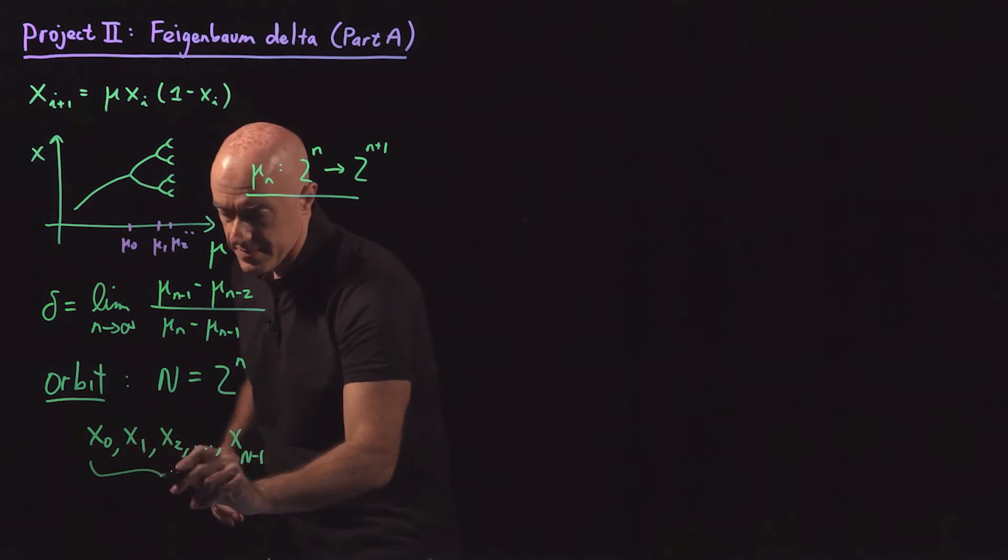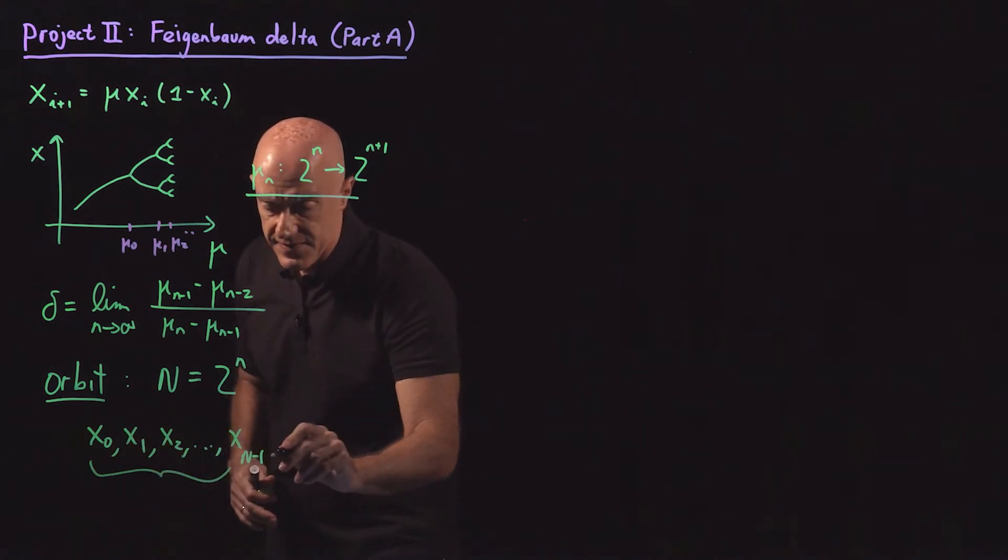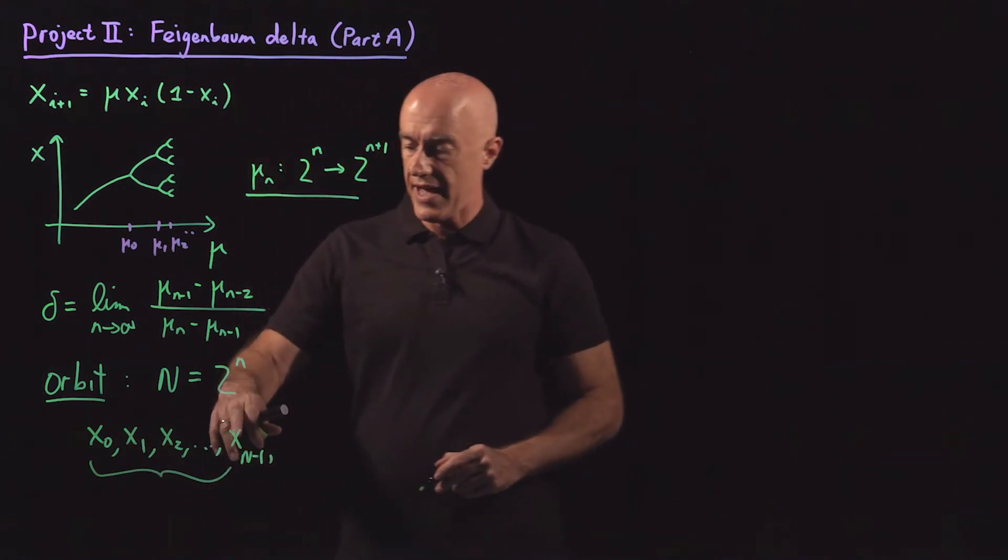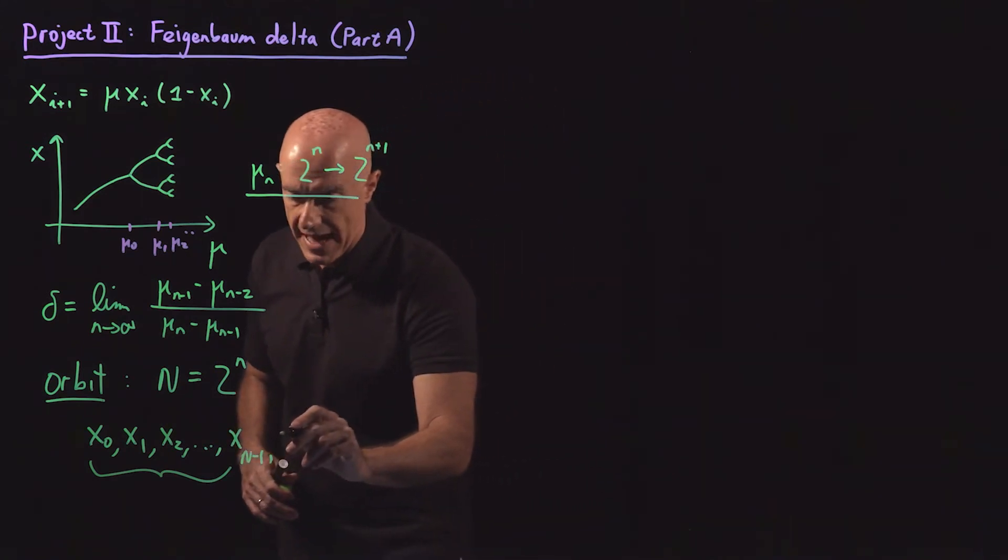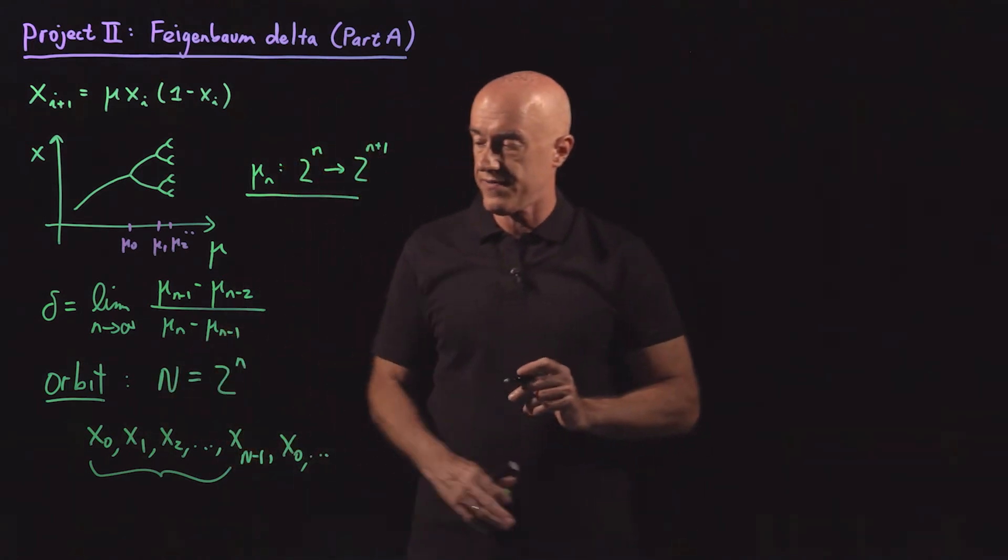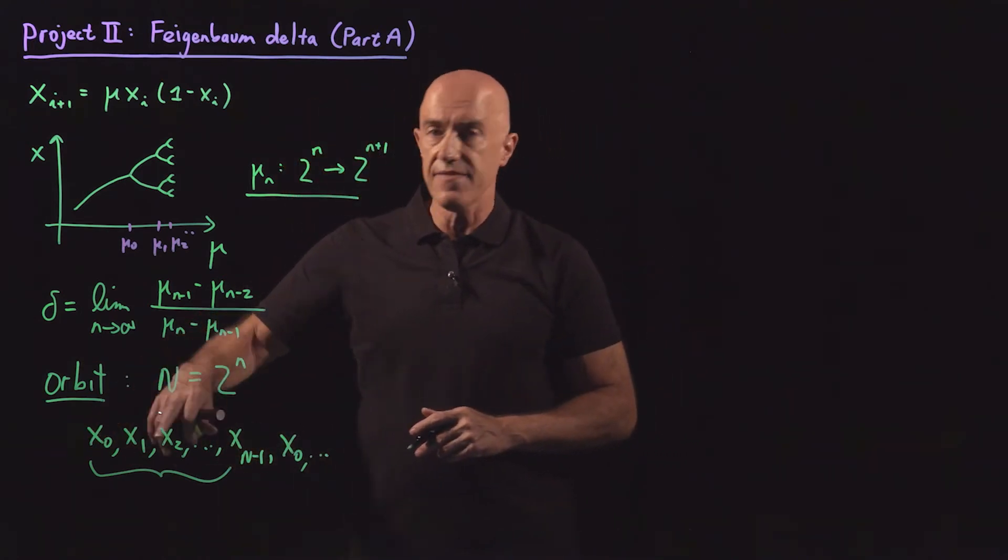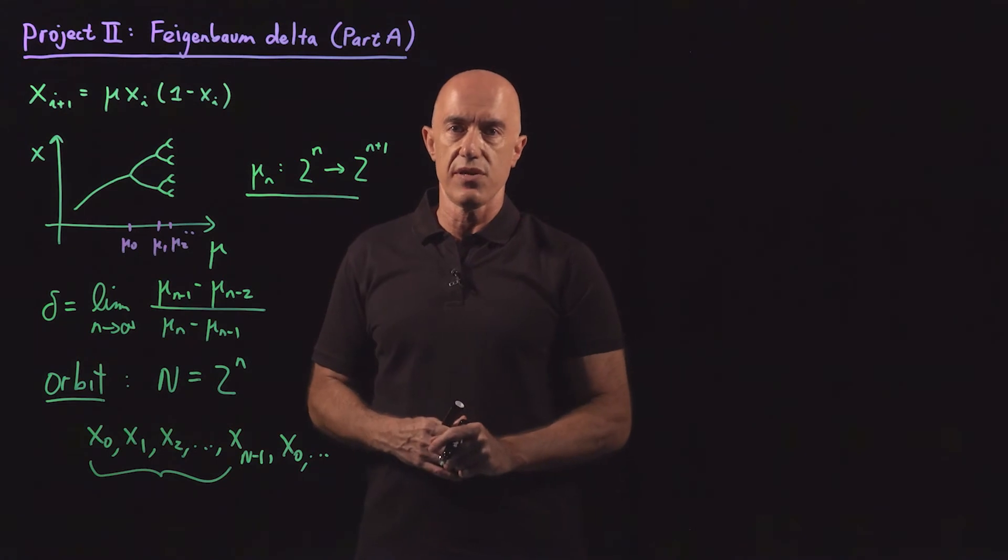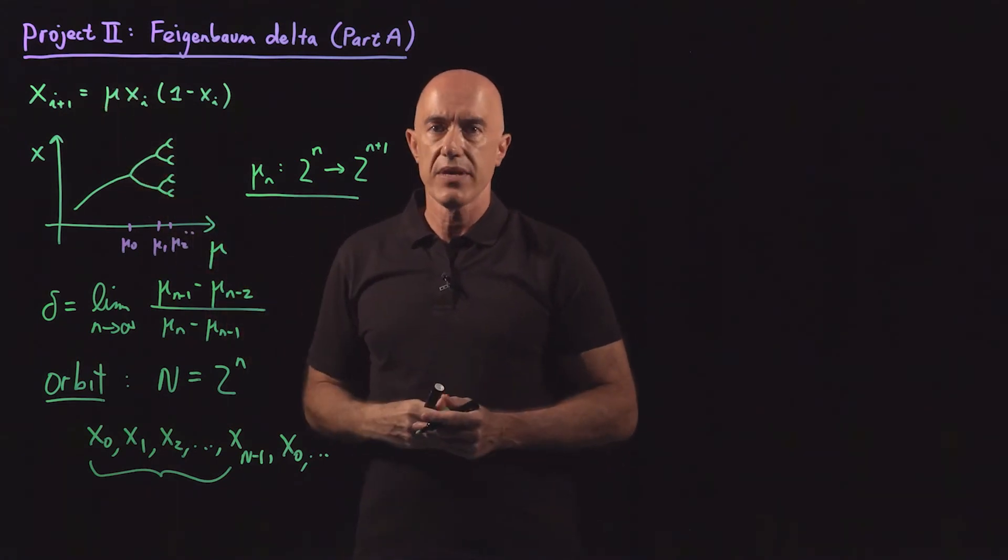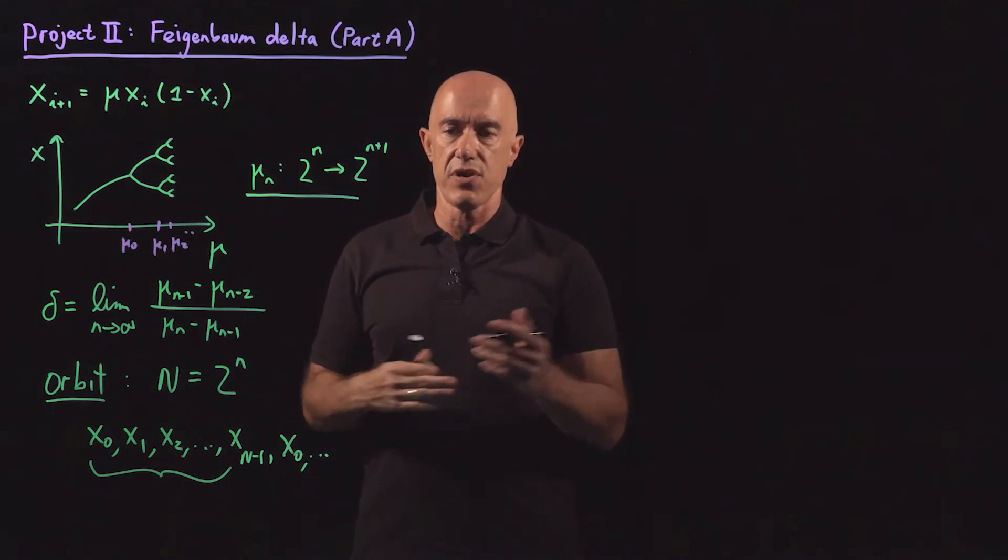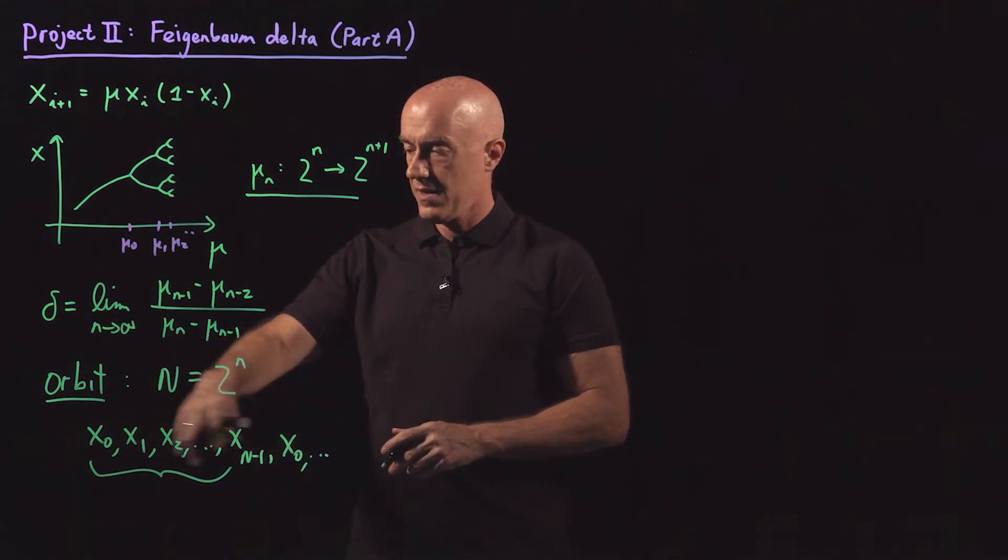This is the orbit. Because after this value of x sub capital N minus 1, we end up back again with x0. So it will repeat itself. So the first N values of x is called the orbit of the logistic map. And that's the case when you have periodic behavior.